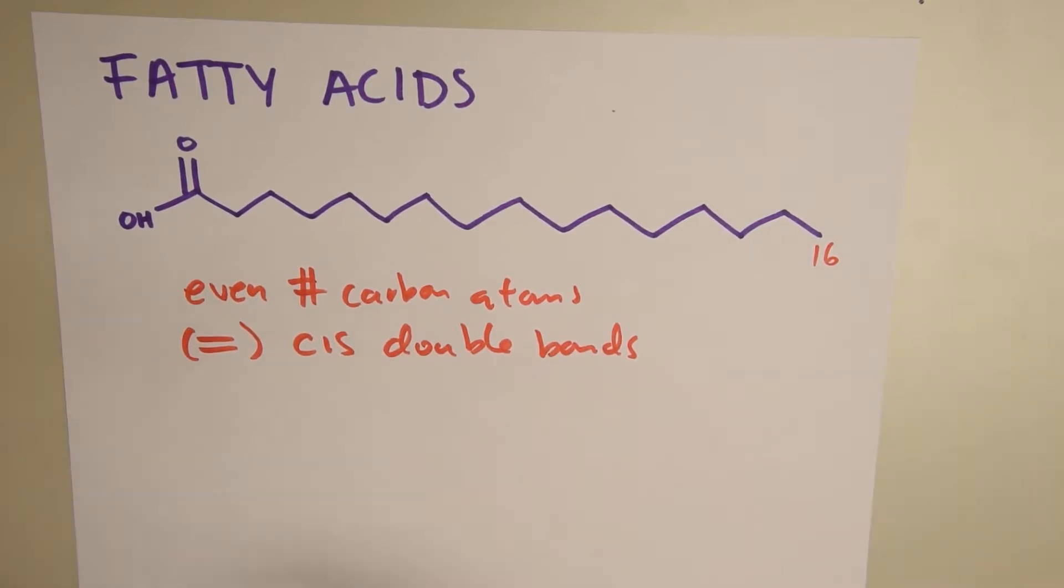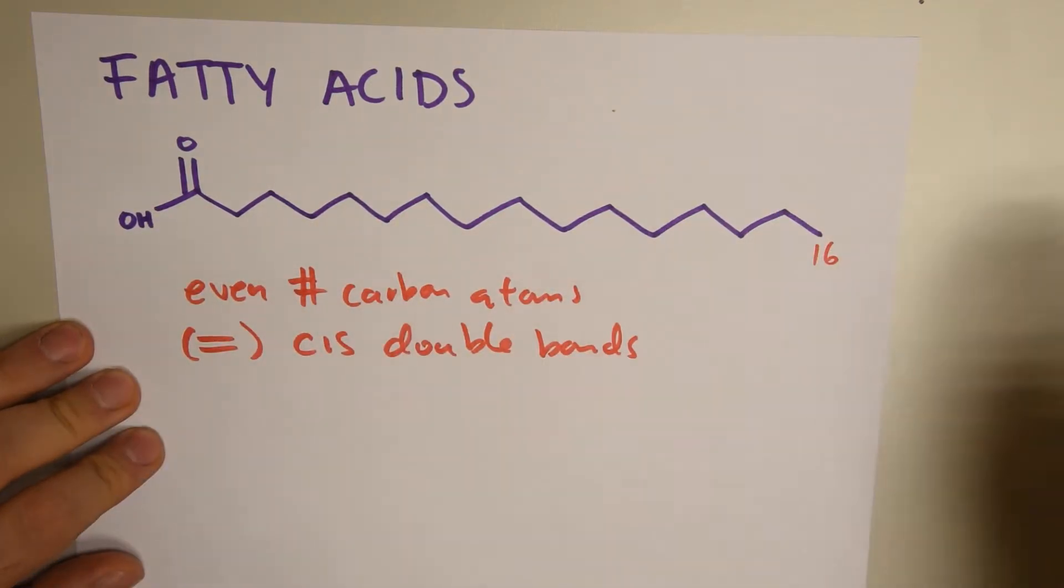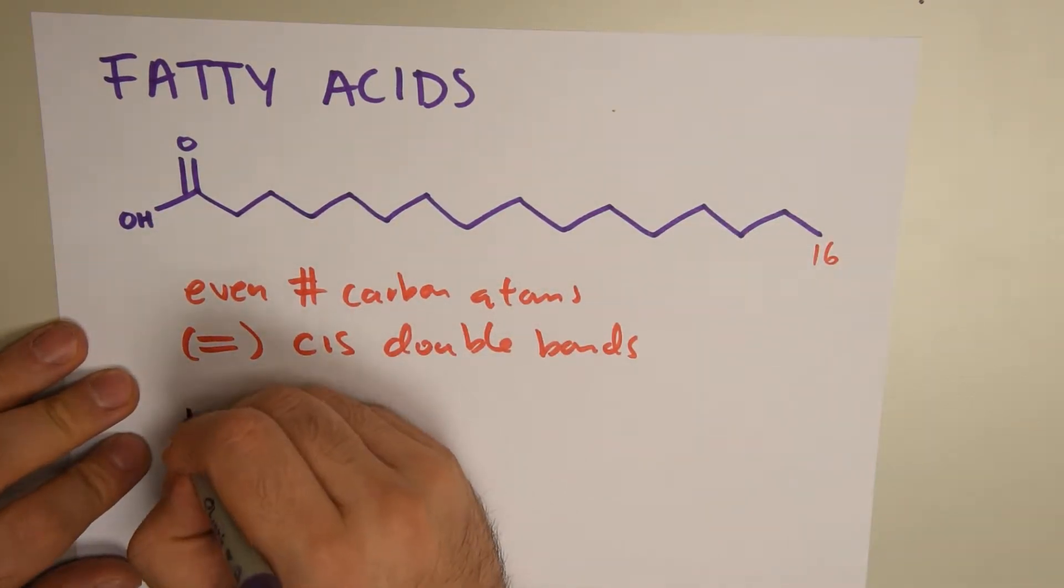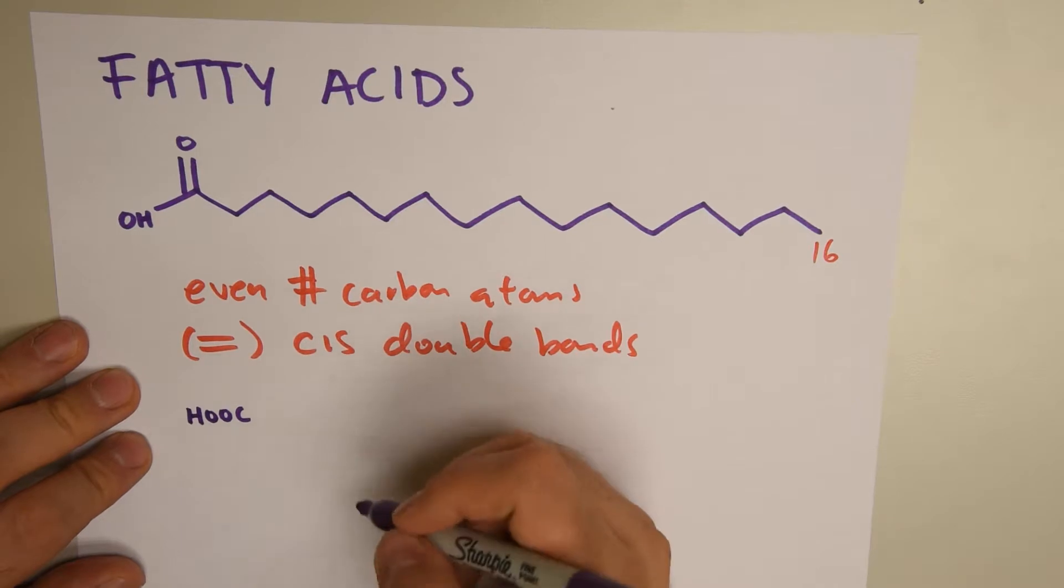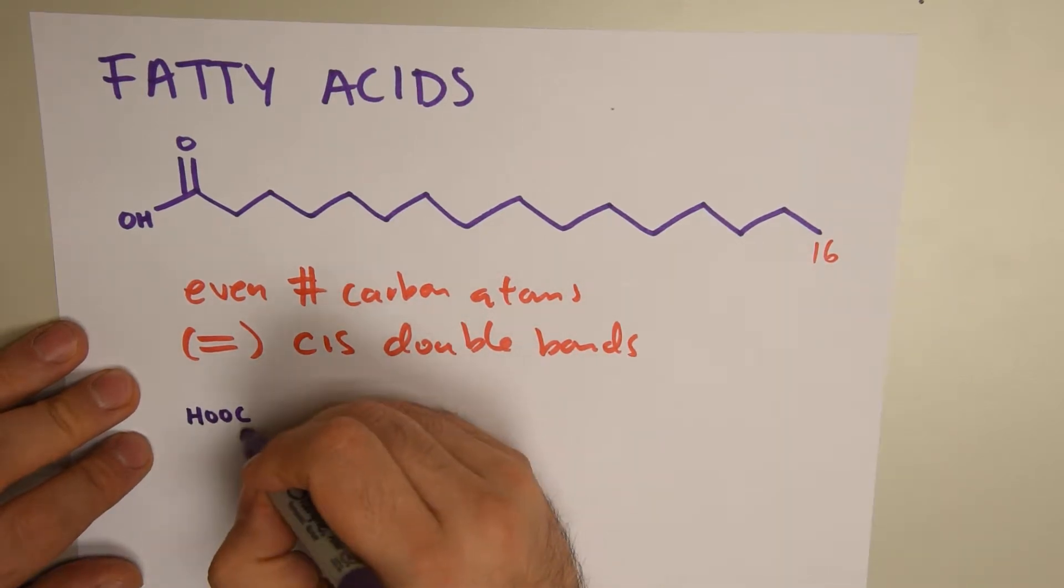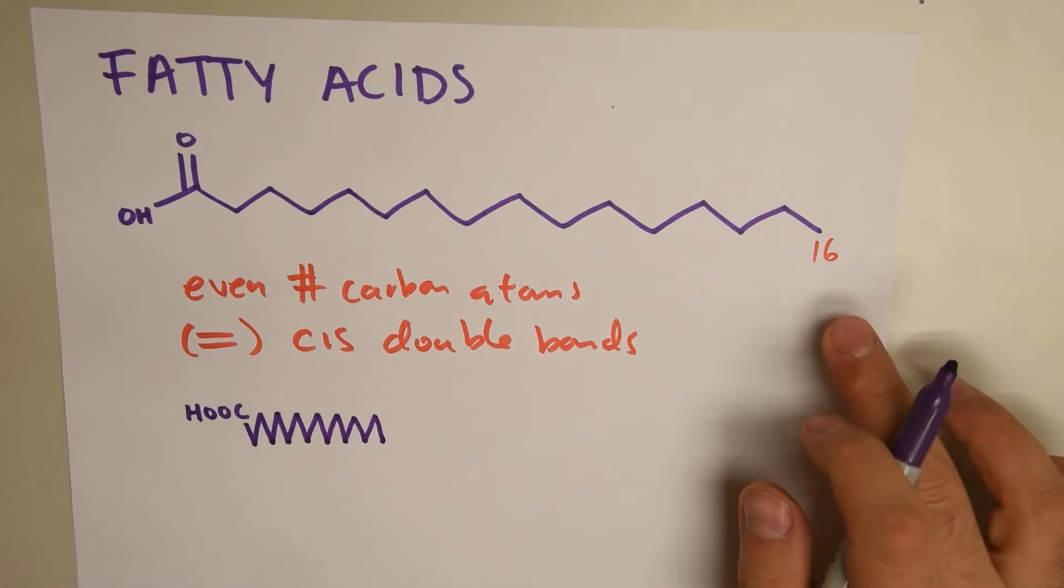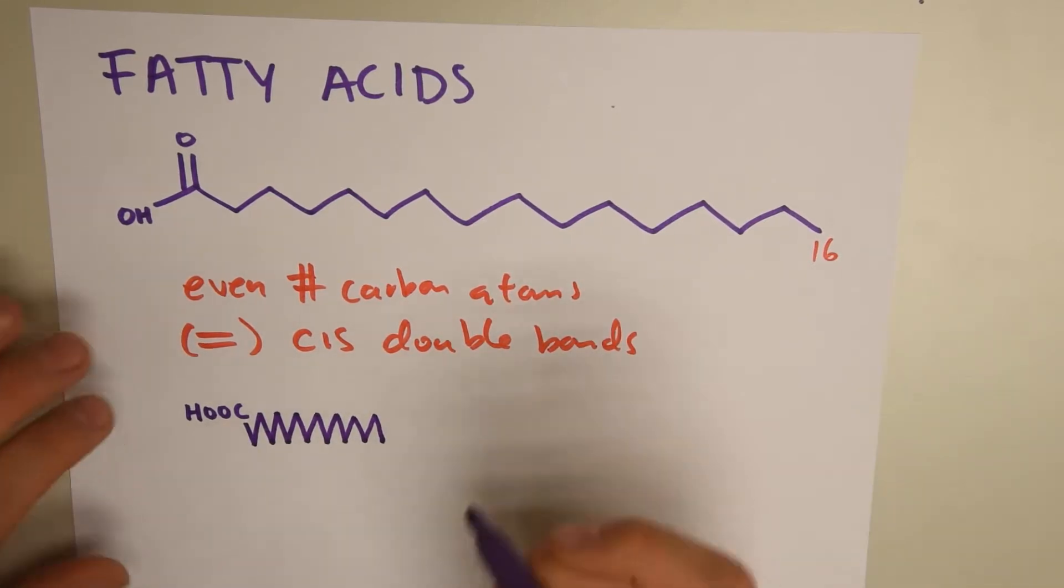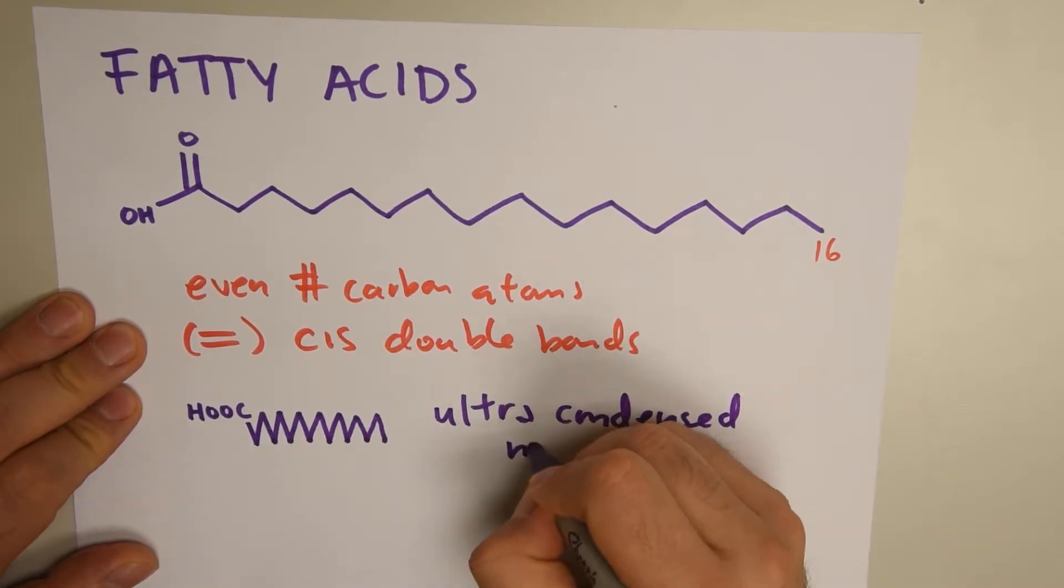When we condense these formulas into their ultra condensed form, there are several ways to represent them. Instead of having this long chain, we condense the group into its condensed formula. So this is my first carbon, and we draw a very close zigzag with the same amount of carbons, counting 1 through 16. So we have a 16 length fatty acid. Since they're really long, this ultra condensed notation is very useful.